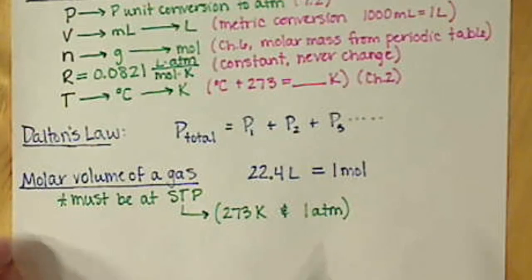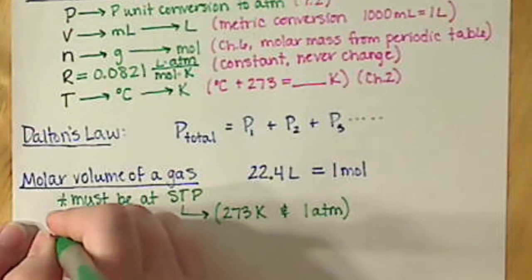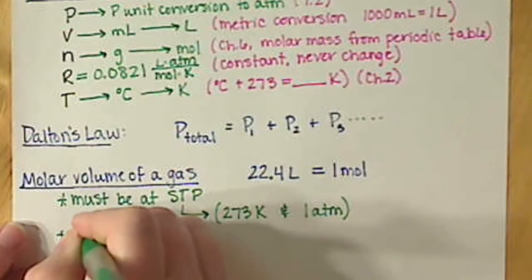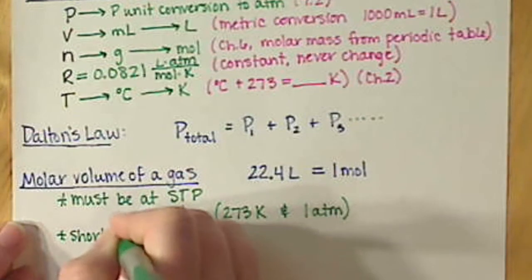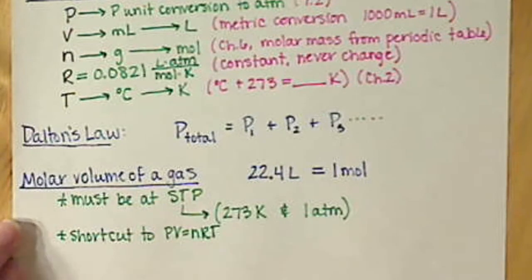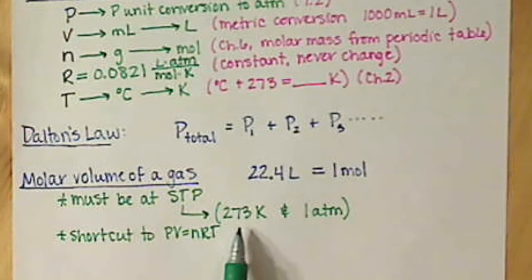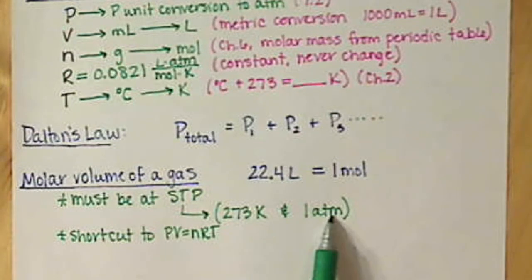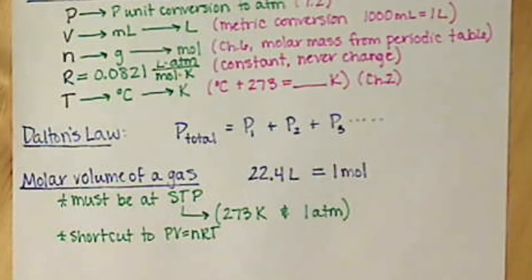You can always plug in your values of 273 Kelvin into temperature and one atmosphere into pressure into your ideal gas law in order to do this calculation. This is just a shortcut, kind of decreases the amount of calculations you have to do.